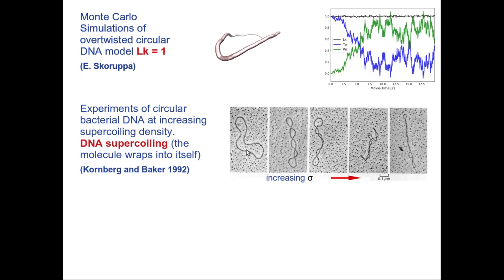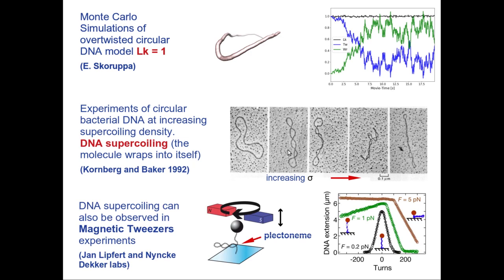This situation is called DNA supercoiling, where the molecule wraps into itself. In many situations in bacteria, supercoiling gives much more compact conformations to the DNA compared to the relaxed state. This is one of the reasons why molecules supercoil. This supercoiling can also be induced in the lab in pieces of linear DNA using a magnetic tweezers experiment.